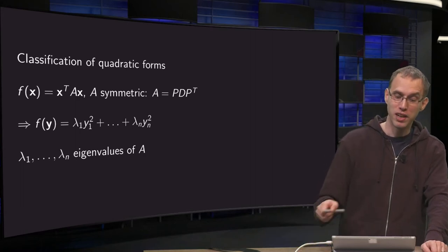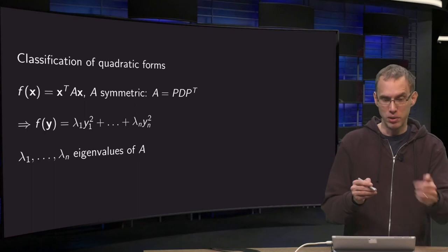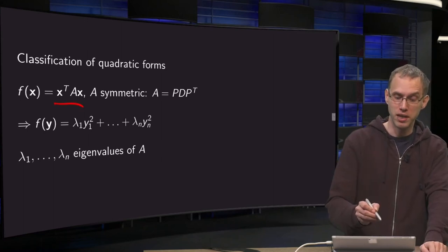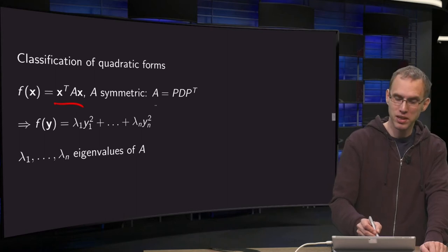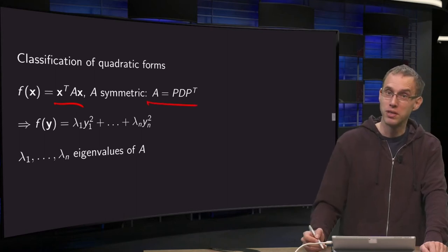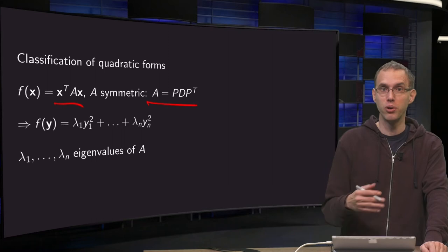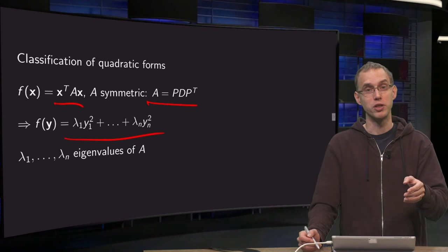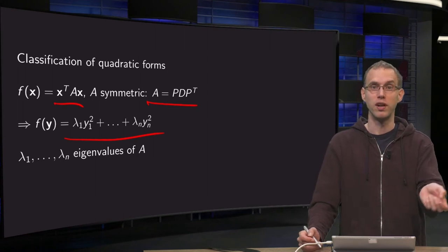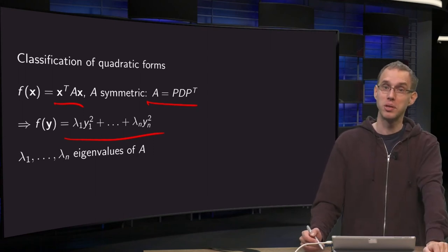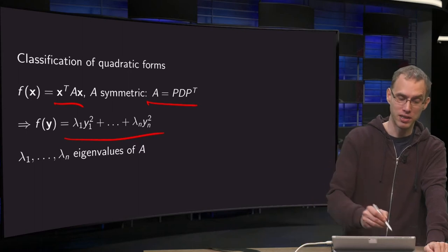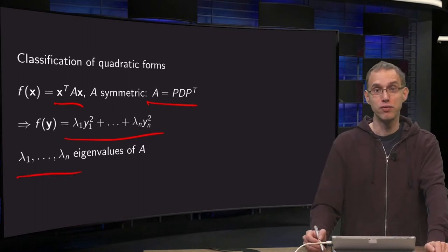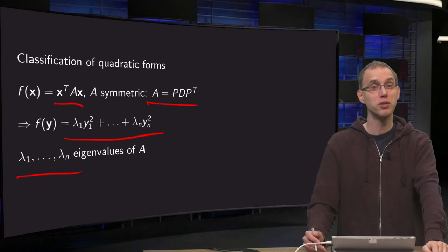So about classification of quadratic forms. There is a quadratic form again: f equals x transpose times A times x. A is symmetric, so A equals P times D times P transpose. We can find some new variable y, such that f of y equals lambda 1 y1 squared plus lambda 2 times y2 squared plus lambda n times yn squared, where lambda 1 up to lambda n are the eigenvalues of D and also the eigenvalues of A.